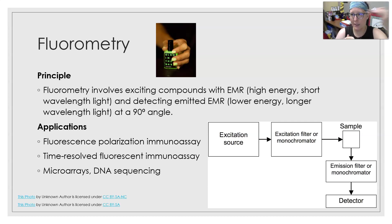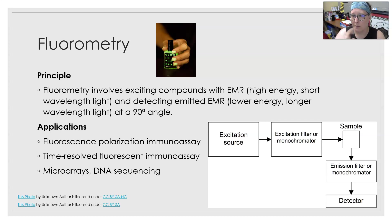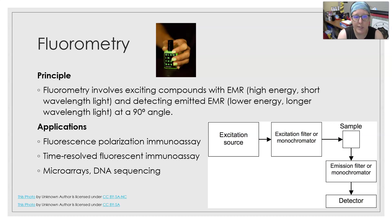You shine the light in one direction, and then the sample glows, and you detect the emitted light at a 90 degree angle. The applications of fluorometry include fluorescence polarization immunoassay, time-resolved fluorescent immunoassays, and microarrays in DNA sequencing.